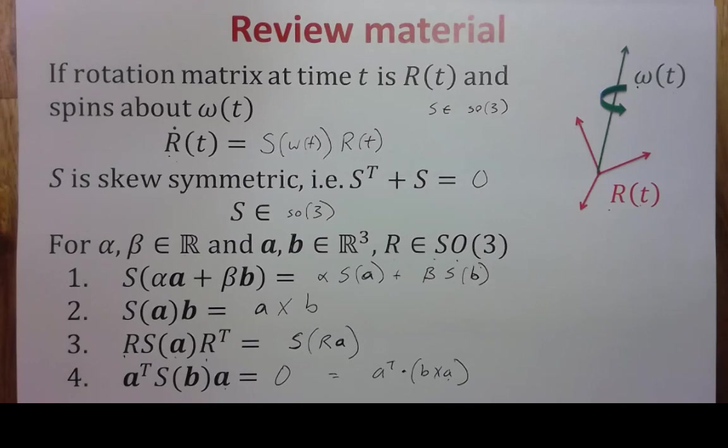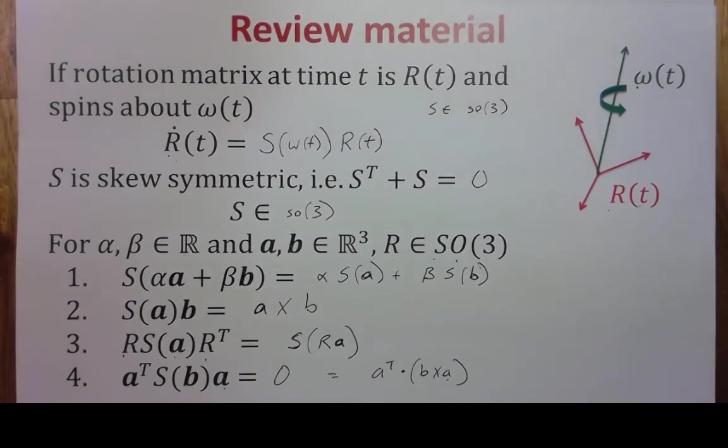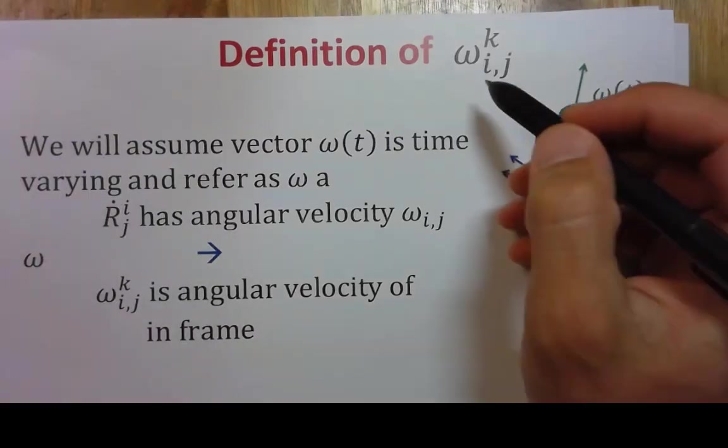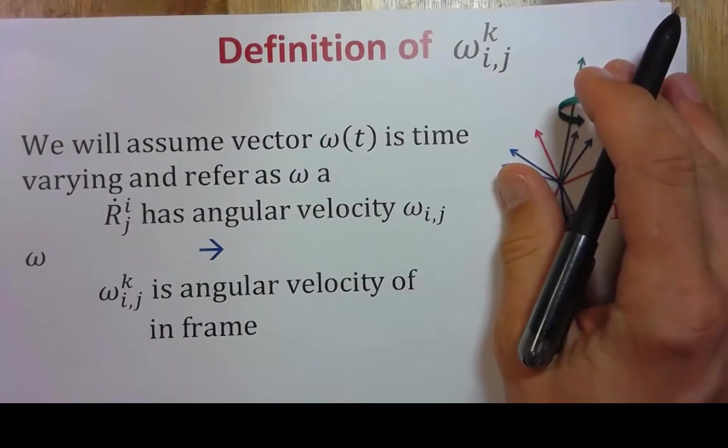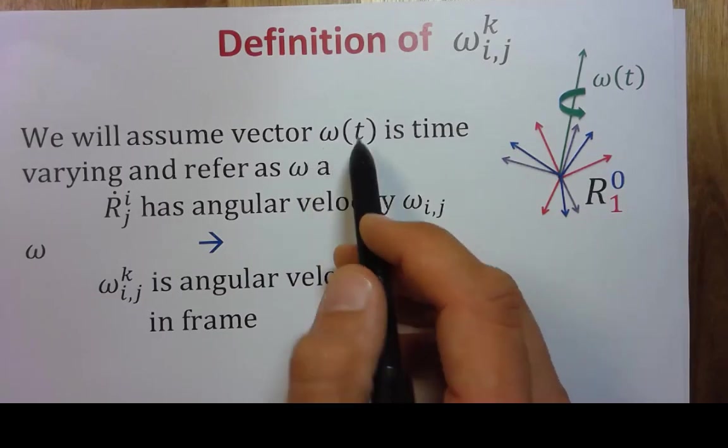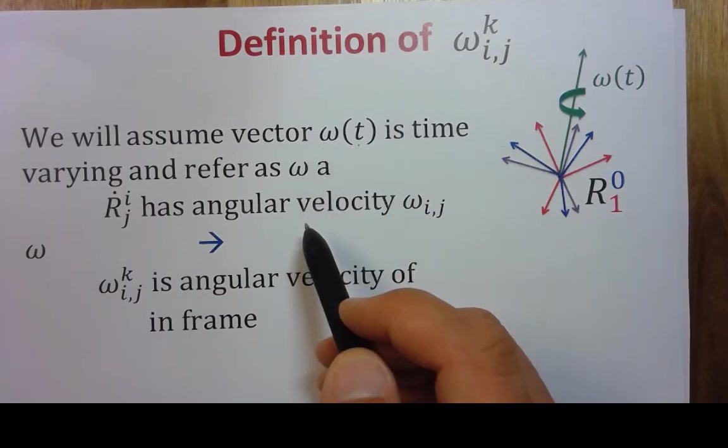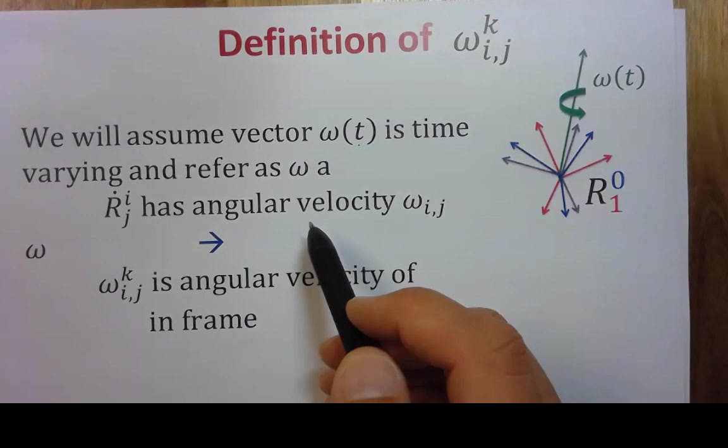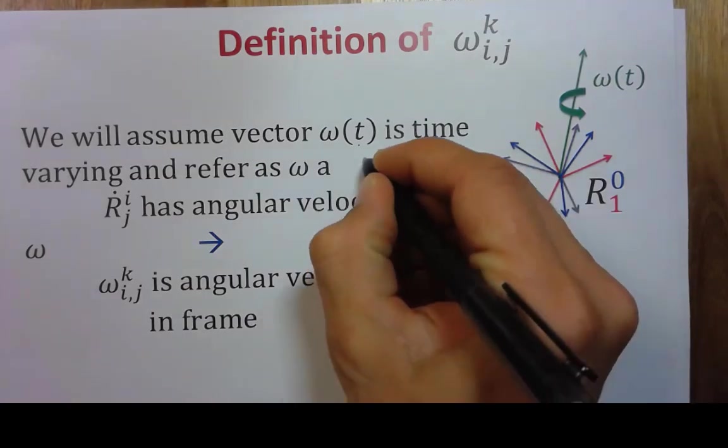Next we need to come up with a definition of how do we find our skew symmetric matrix ω. So we're going to assume that this vector ω is time-varying, so it's got the t in there, and we're going to refer to ω as a free vector.